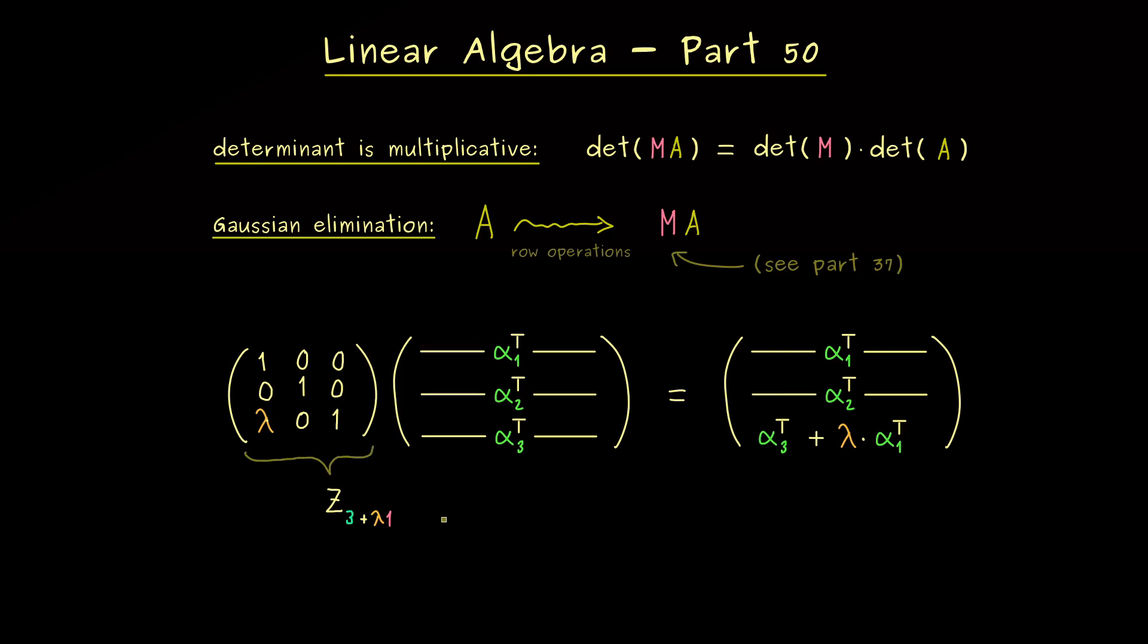Now, this is all not so important. The important part is that all these matrices here always have a triangular structure. And moreover, they have only ones at the diagonal. In other words, we can use the last video and conclude that the determinant of Z is simply 1.